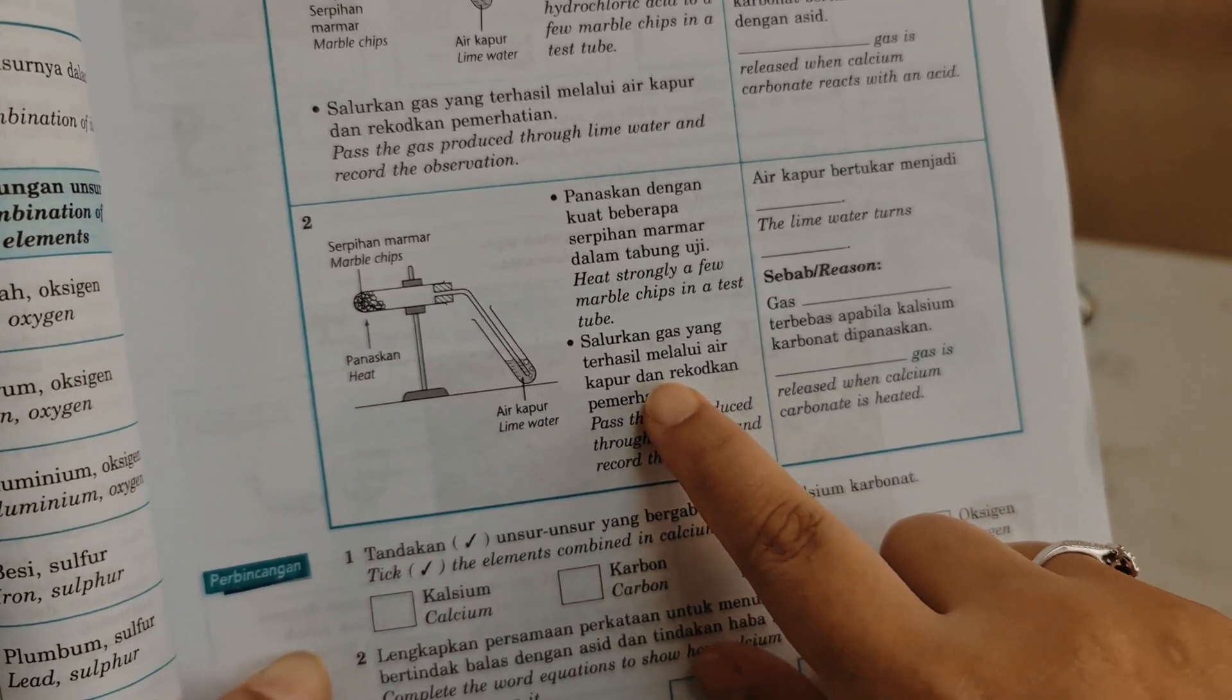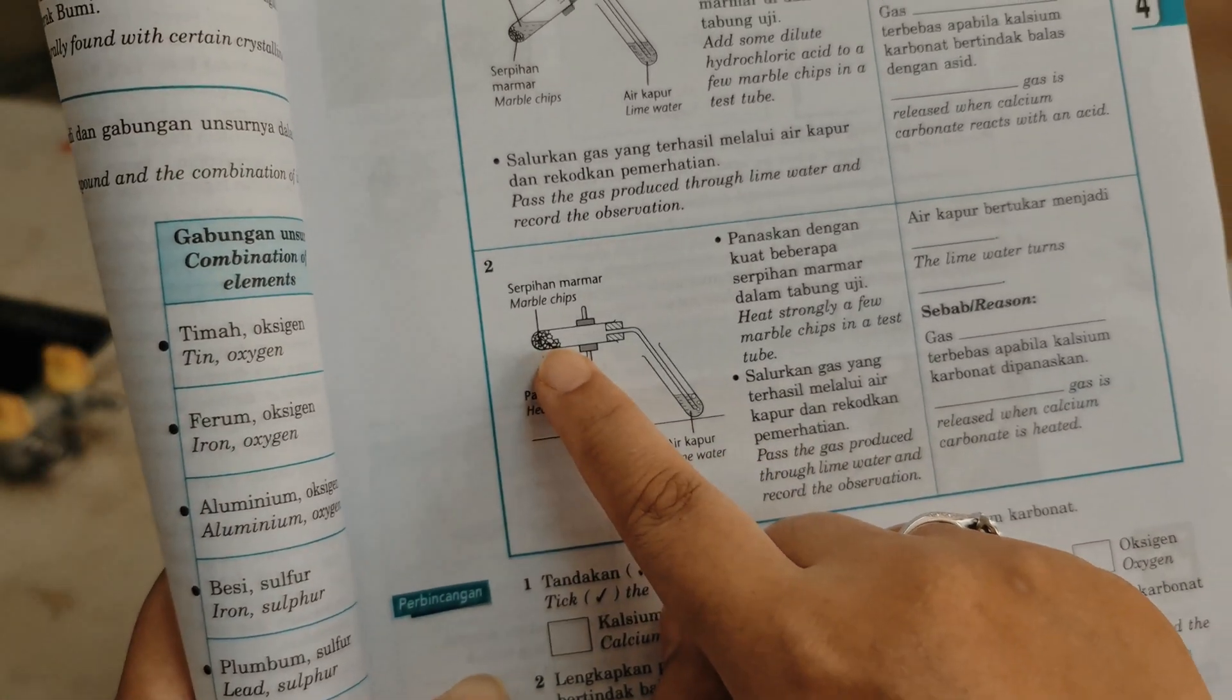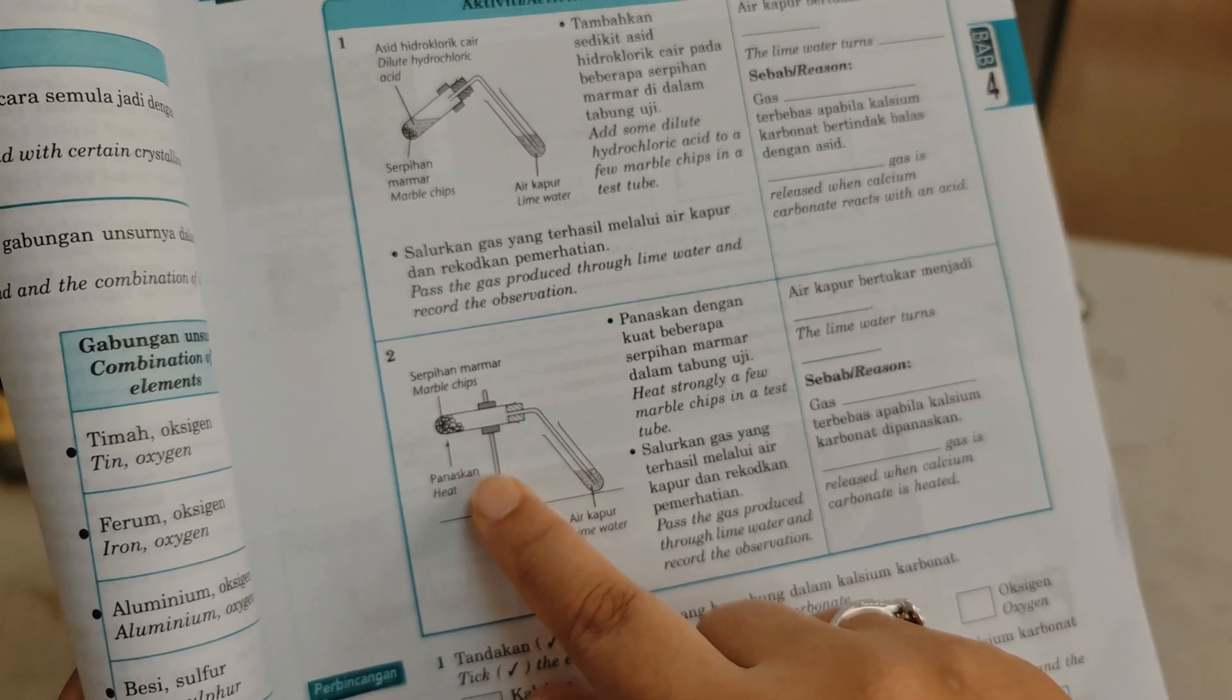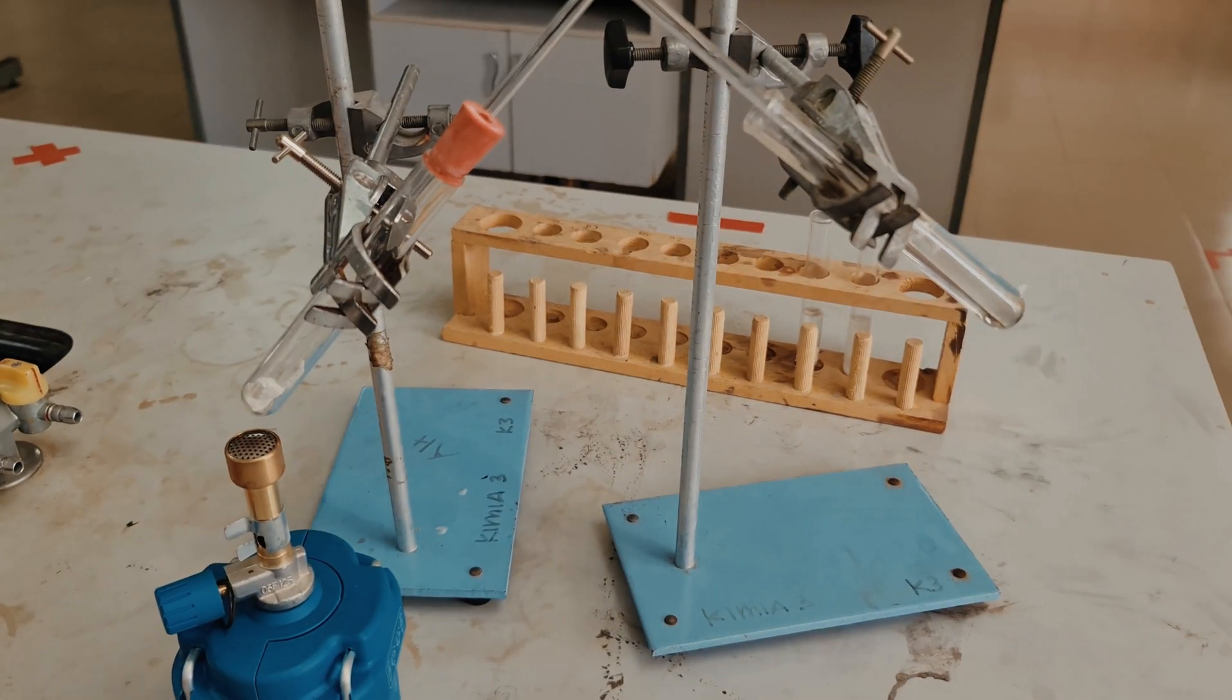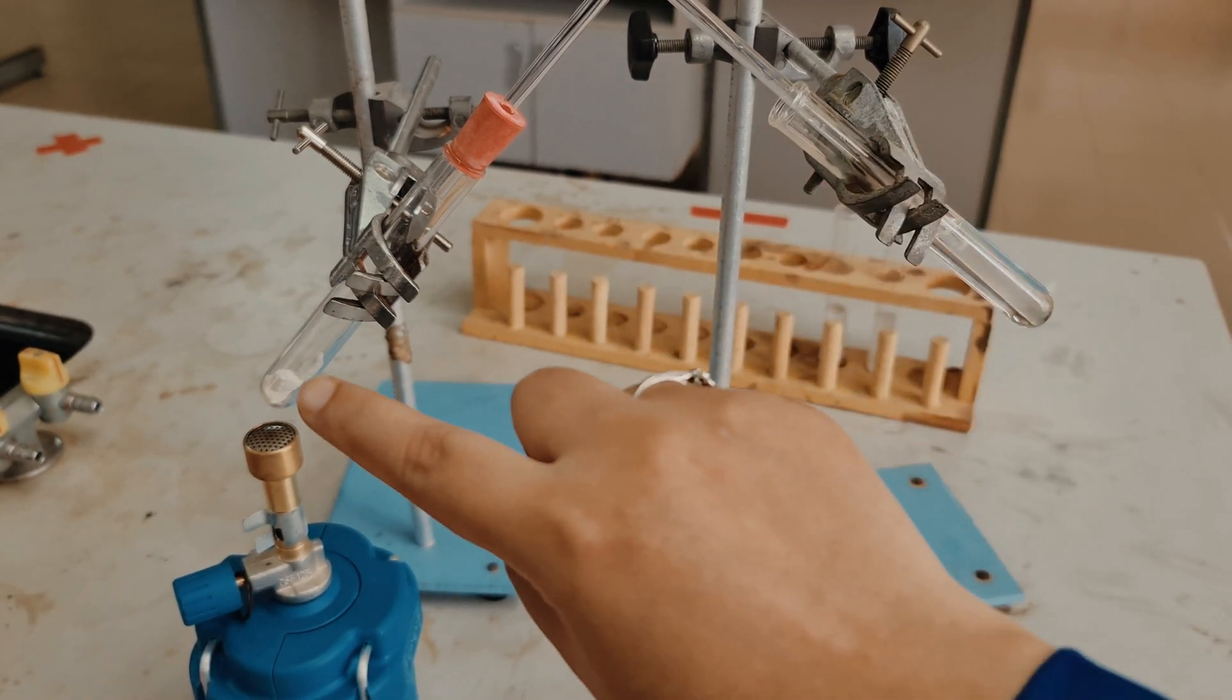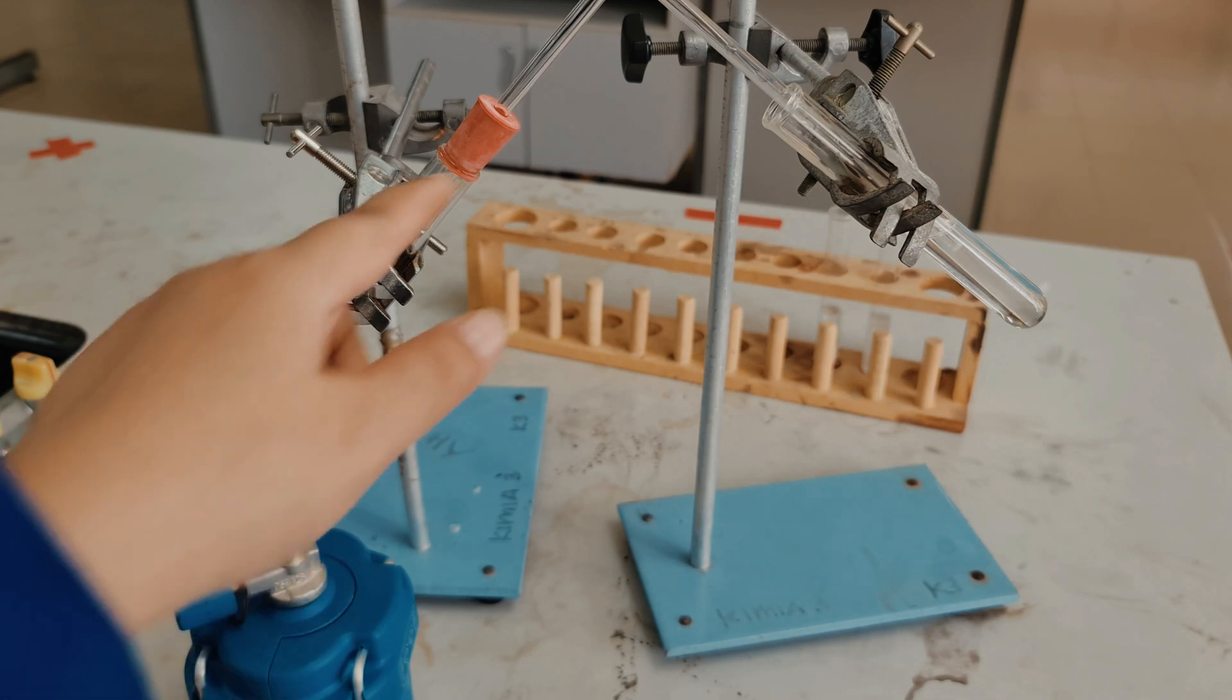For the second part, we are going to repeat the experiment by heating the marble chips. We are going to do the same setup as the previous one but this one without the acid. Okay, so I already did this and here I have the limewater and here I have the marble chips with the connecting tubes and the rubber stopper.